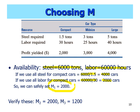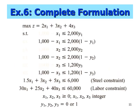This is the complete formulation for the problem. Don't forget to put the sign restrictions after writing down the objective function, constraints, and the definition of all decision variables. Next, we're going to look at another condition that can be formulated using integer programming: the if-then condition.